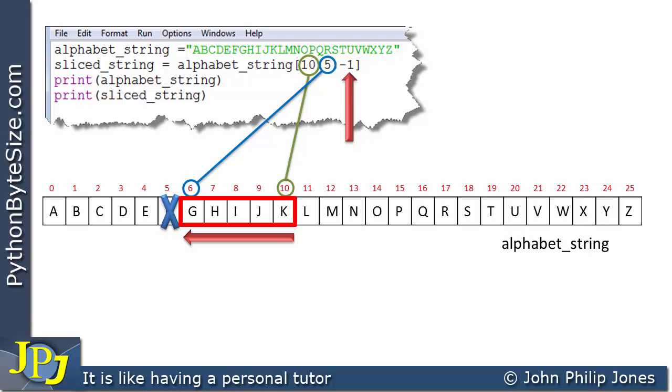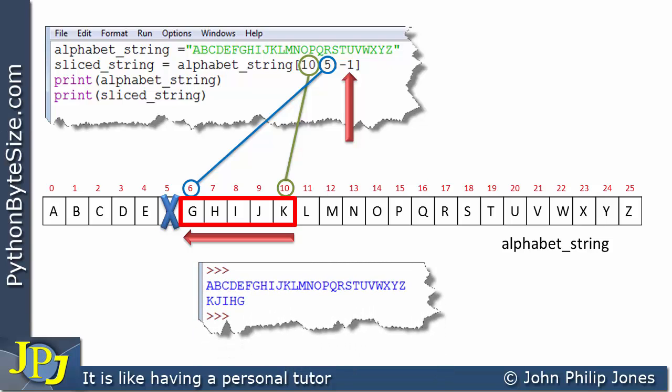So when we see the printout of this particular program, you can see that this line here is responsible for printing the slice string. And that slice string appears here. And if you have a look at it, it's K, J, I, H, G.